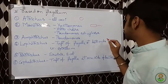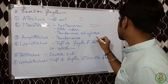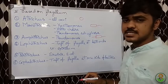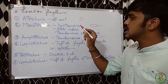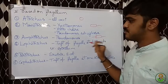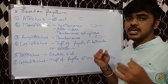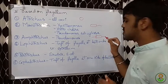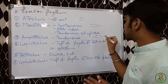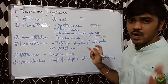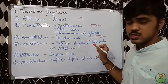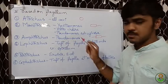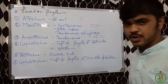Amphitrichous — in this type, one flagellum is present at each of the two ends of the bacteria. This is helpful in movement: the bacterium can move in both directions. This is the usefulness of amphitrichous arrangement. An example is Pseudomonas.